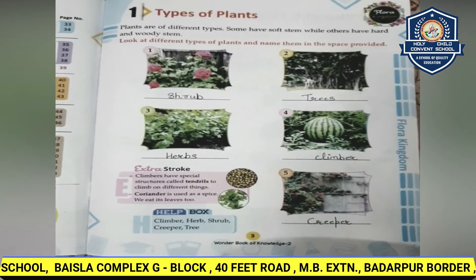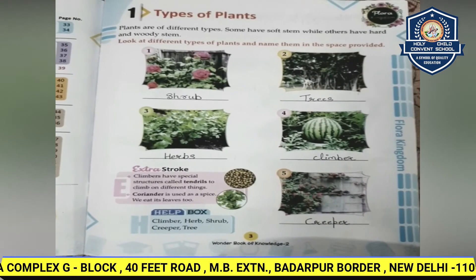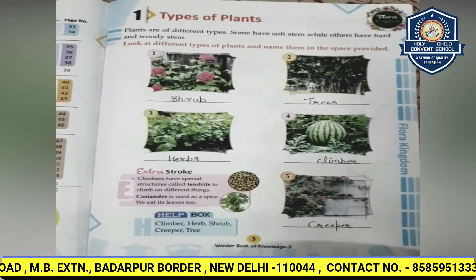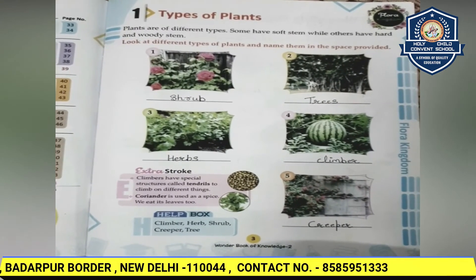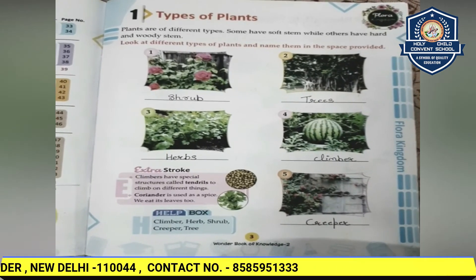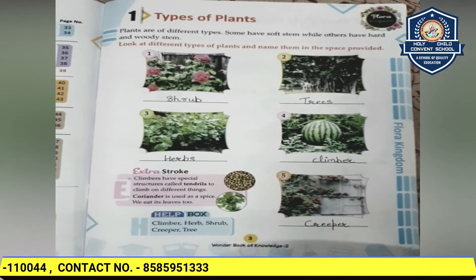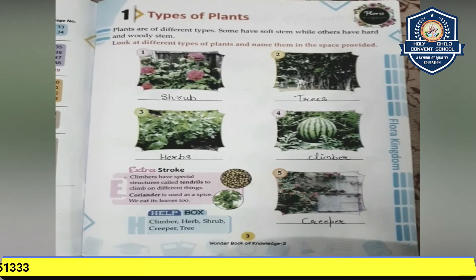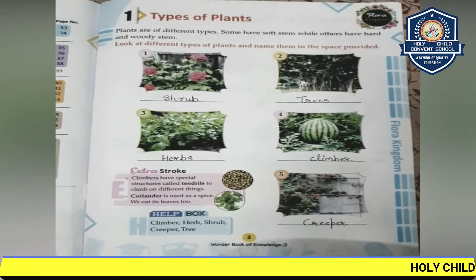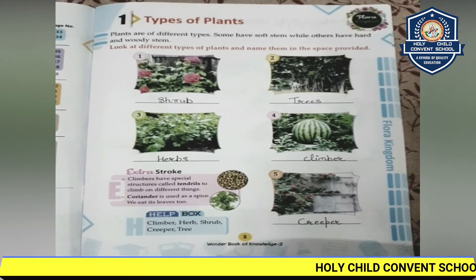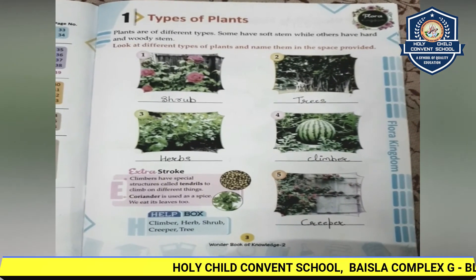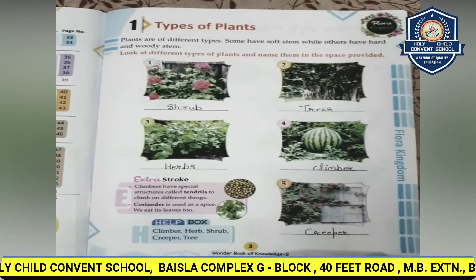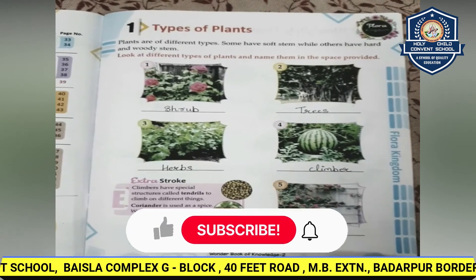There are also herbs like grass, spinach, coriander, mint, oregano, rosemary, etc. Herbs are short plants with green, delicate, and tender stems. They may have no or fewer branches. There are approximately 75 to 100 types of herbs in the natural science library of medicines.